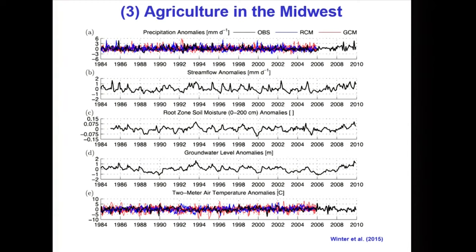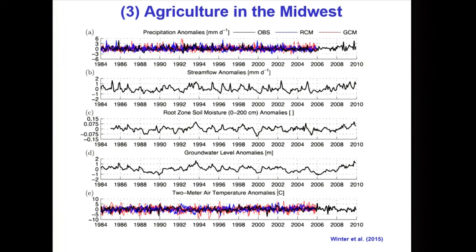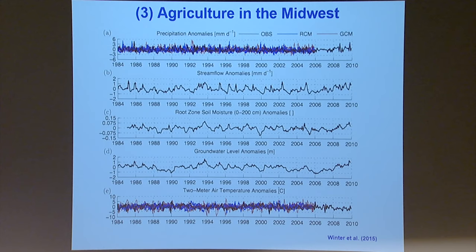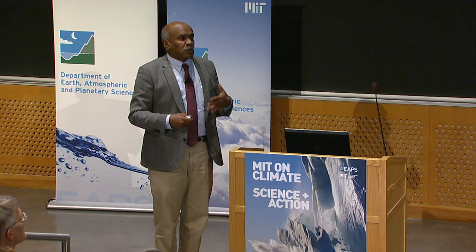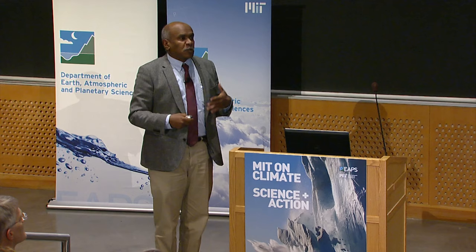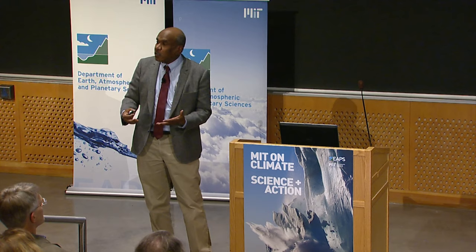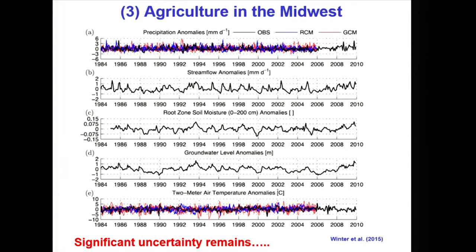Closer to home, an example from agriculture in the Midwest: a unique dataset on the hydrologic cycle components for Illinois — precipitation, streamflow, soil moisture, groundwater, and temperature — shows how these variables are connected, including the 1988 drought and 1993 flood. However, there is no trend visible during the last 25 years in the hydrologic cycle, contrary to GCM and regional climate model predictions suggesting droughts would evolve in this region. This highlights significant uncertainty in regional climate change impact predictions.